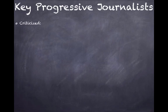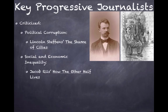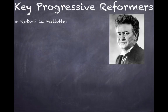Progressive journalists you should know: they criticized political corruption, such as Lincoln Steffens' 'The Shame of Cities,' which criticized municipal or city governments. Social and economic inequality was the focus of Jacob Riis's 'How the Other Half Lives.' Ida B. Wells-Barnett was a famous journalist who advocated an end to lynchings of African Americans. And finally, Upton Sinclair's 'The Jungle' focused on working conditions in the meatpacking industry.